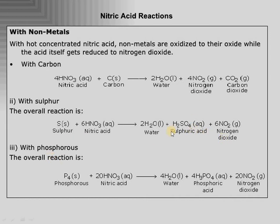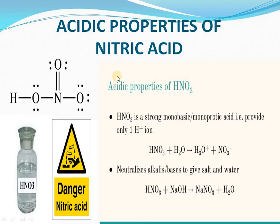Similarly, phosphorus will be converted to phosphoric acid. A useful tip to balance these reactions: carbon has valency 4, so the coefficient for HNO3 is 4 — same as with concentrated copper reaction. For sulfur, the valency is 6, so multiply by 6. This way we can remember these important reactions. These reactions are at base level plus one. Next is the acidic property — acid can donate a proton: HNO3 + H2O → NO3⁻ + H3O⁺.